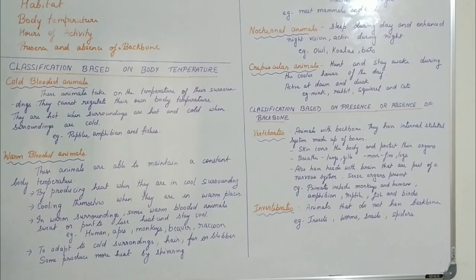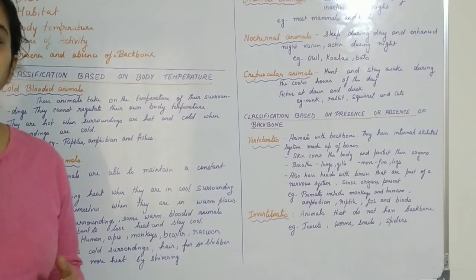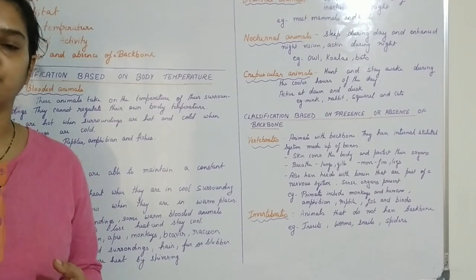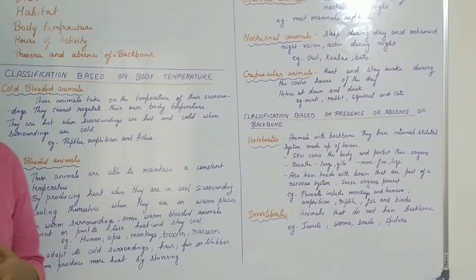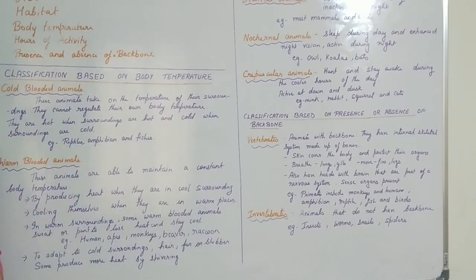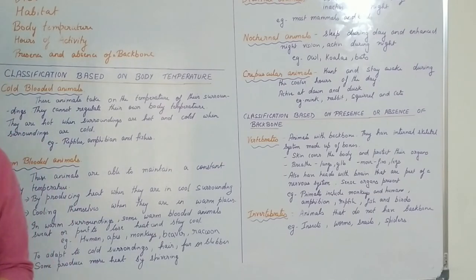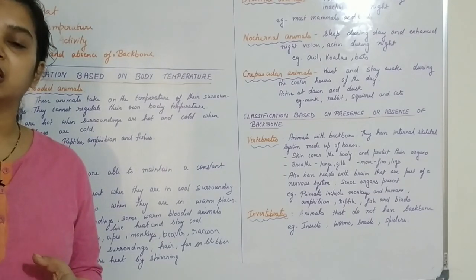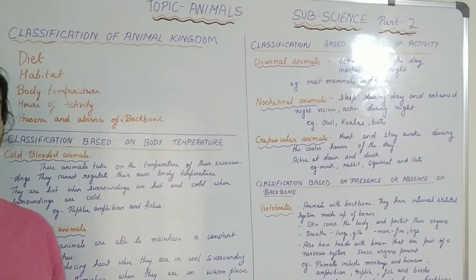Warm-blooded animals include humans, apes, monkeys, beavers, and raccoons. To adapt to cool surroundings, they have hair and fur present on the body. We also have hair on our body as human beings, but in a very small amount compared to animals. The polar bear, for example, has full fur around the body to stay warm in cold weather. Some animals like whales have blubber — very thick skin — to keep themselves warm during the cold season.